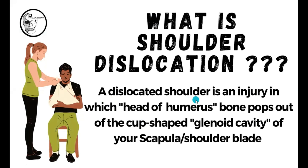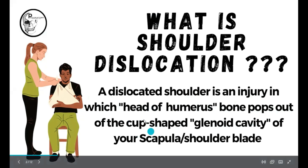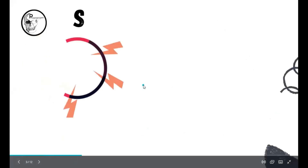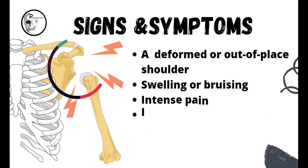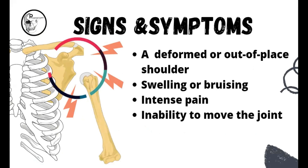A dislocated shoulder is an injury in which the head of the humerus — that is nothing but the bone of the upper arm — pops out of the cup-shaped glenoid cavity of the scapula, or the shoulder blade. That is what happens in an actual shoulder dislocation.